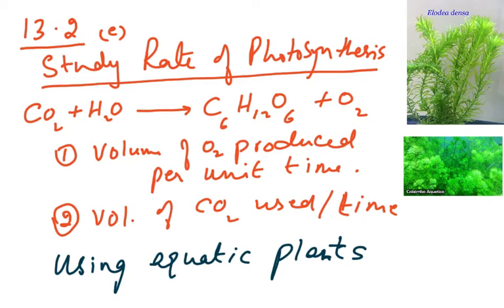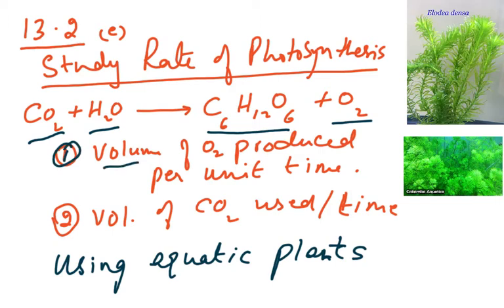Looking at the O-level equation, carbon dioxide plus water gives glucose plus oxygen. To study the rate of photosynthesis, we can either study the volume of oxygen produced per unit time, or the volume of carbon dioxide used per unit time.